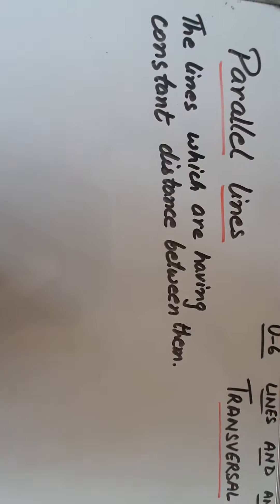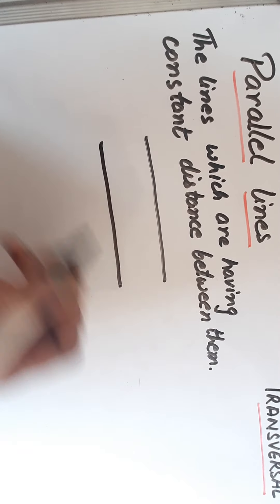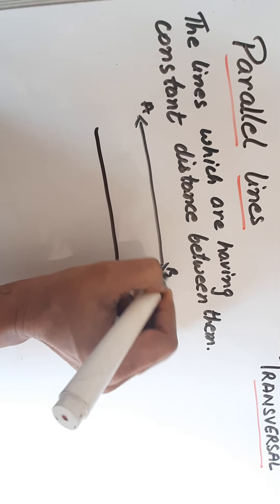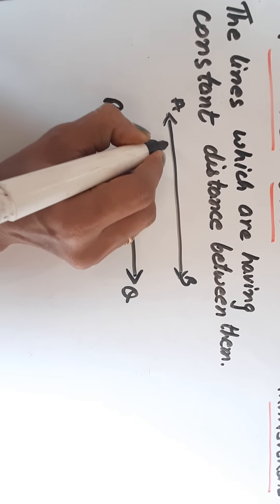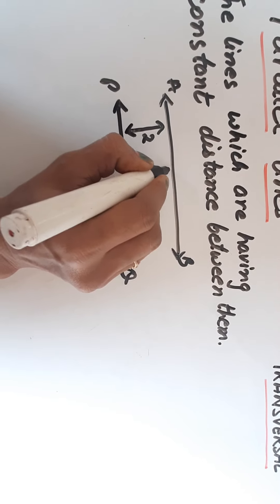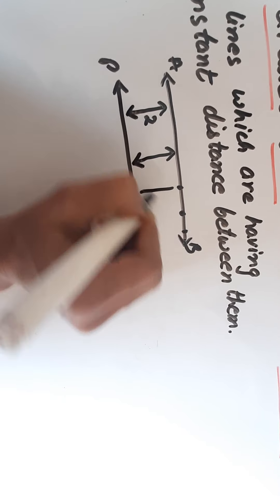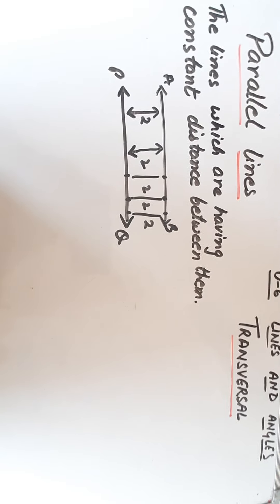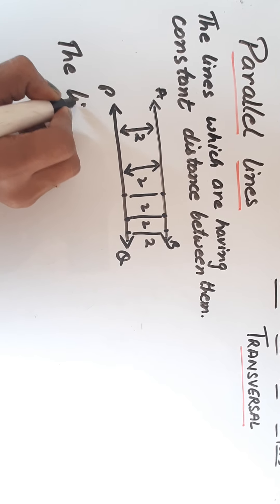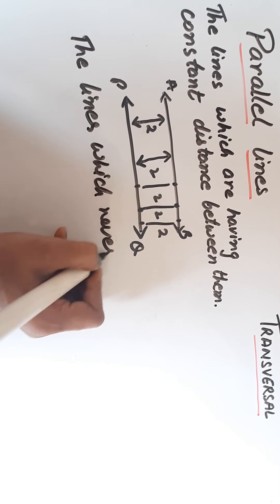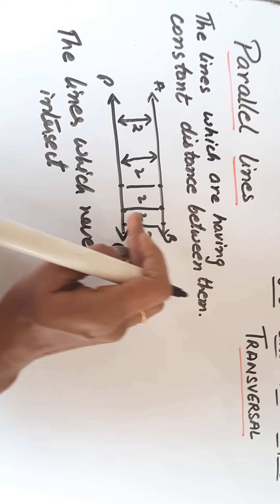Dear students, what do we mean by parallel lines? These are lines which have a constant distance between them. For example, if we make a line AB and another line PQ, and the distance between every two corresponding points is 2 cm, then these lines are known as parallel lines. Another definition: parallel lines are lines which never intersect. They do not intersect because the distance between them is constant.